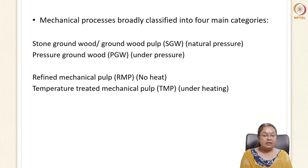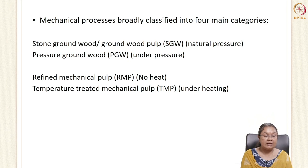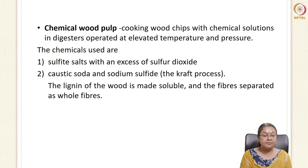Mechanical processes are categorized into four types: Stone Ground Wood (SGW), where natural pressure is applied; Pressure Ground Wood (PGW), which is mechanical and motorized under pressure; Refined Mechanical Pulp (RMP), with no heating; and Thermo-Mechanical Pulp (TMP), where heating is applied. By changing pressure and temperature, we can perform different mechanical processing methods.